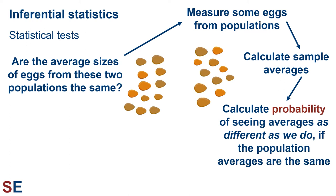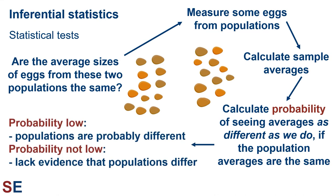Statistics uses ideas from probability math to calculate this probability. Then, once we have that probability, we use it to answer our question. If the probability of seeing two sample averages as different as we do is small, then we would decide that the population averages are probably different. Note that we don't prove they're different — we make a decision based on probability. If the probability of seeing two sample averages as different as we do is not small, then these samples are what would easily have been seen if the population averages are the same. We would then conclude that we don't have the evidence to decide that the population averages are different. Note that we don't prove the averages are the same — we make a decision based on probability.